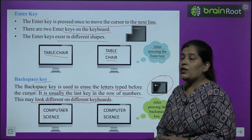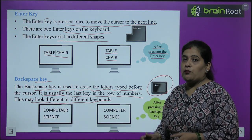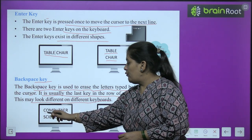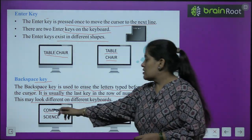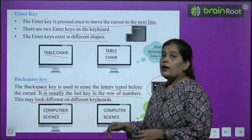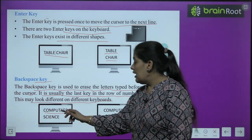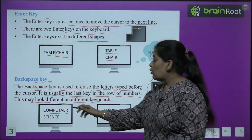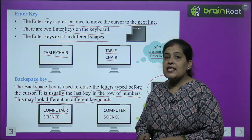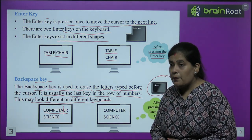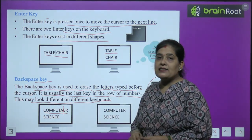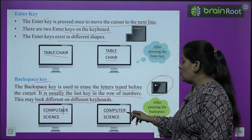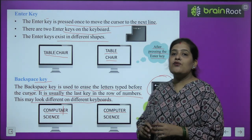Now I will show how to use the backspace key. Suppose I wrote 'COMPUTAER' — I added an extra 'A'. Because 'A' is not in the spelling of 'computer,' I placed the cursor before 'E' and pressed backspace. The letter 'A' was deleted, giving the correct spelling: C-O-M-P-U-T-E-R.